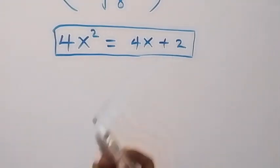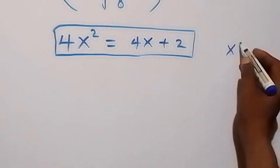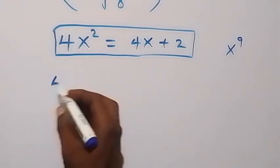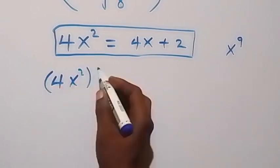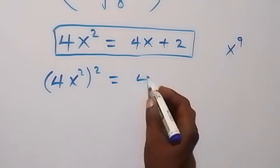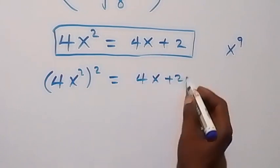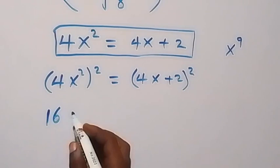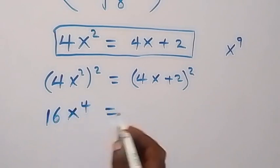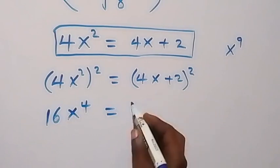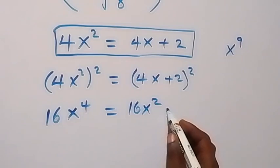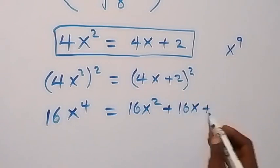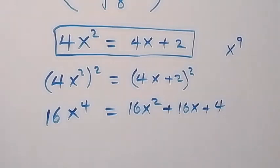Next, let's square both sides again, since we are interested in finding x raised to power 9. When we square both sides, we have x squared squared, which is x raised to power 4 on the left, equal to (4x plus 2) squared on the right. Expanding: 16x squared plus 2 times 4 times 2, that's 16x, then plus 4.